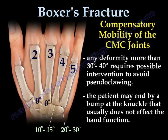The surgeon is less likely to correct deformity in the fourth and fifth metacarpals. Any deformity more than 30 to 40 degrees usually requires some kind of intervention to avoid pseudo-clawing. The patient may eventually end up with a bump at the knuckle that usually doesn't affect hand function.